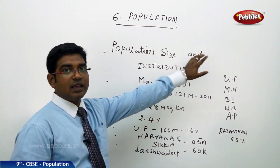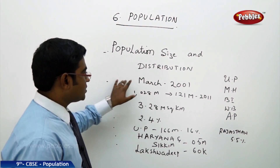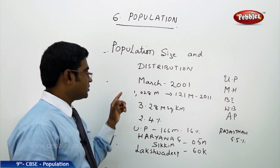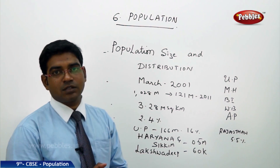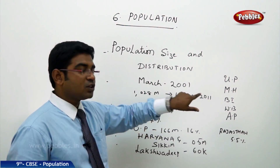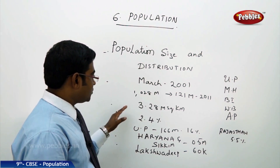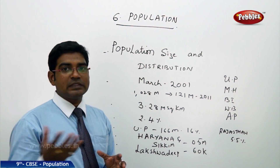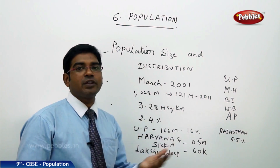India's population size and distribution. As per the census released in March 2001, the total population of India was 1,028 million. We crossed the 1 billion mark, and as per the 2011 census, the Indian population is 1,210 million. This population of over 1 billion is spread over 3.28 million square kilometers.